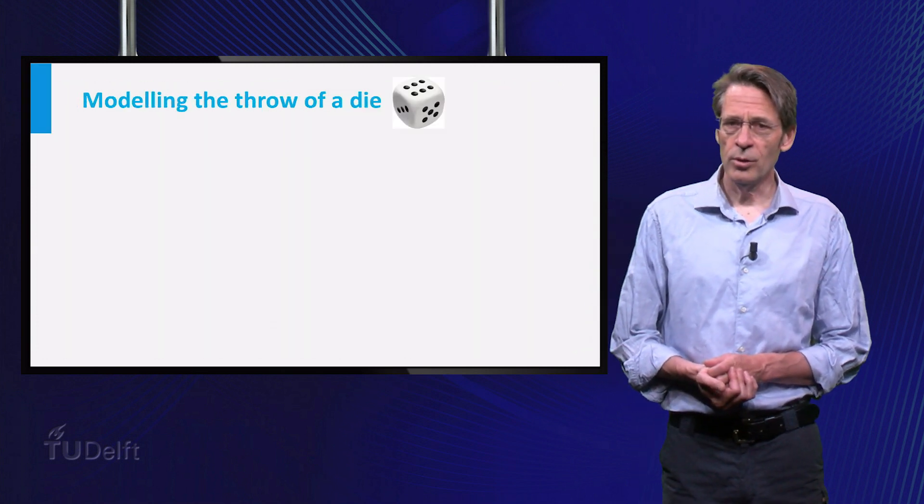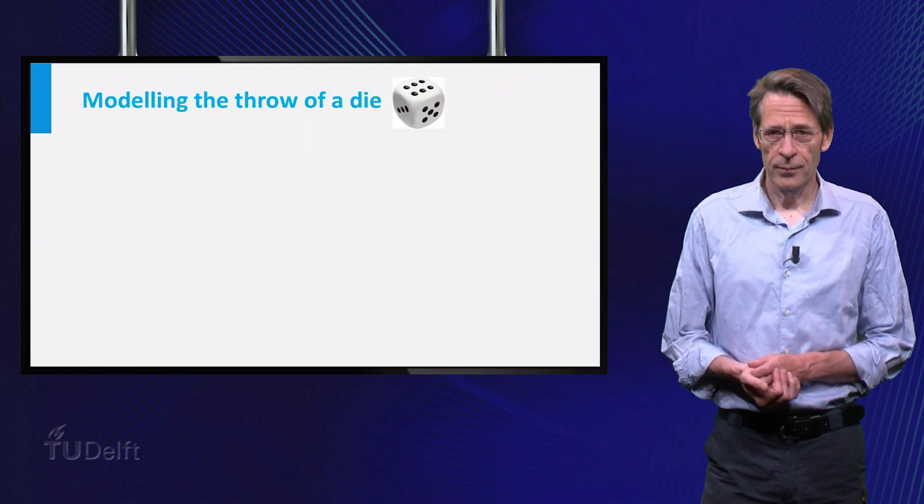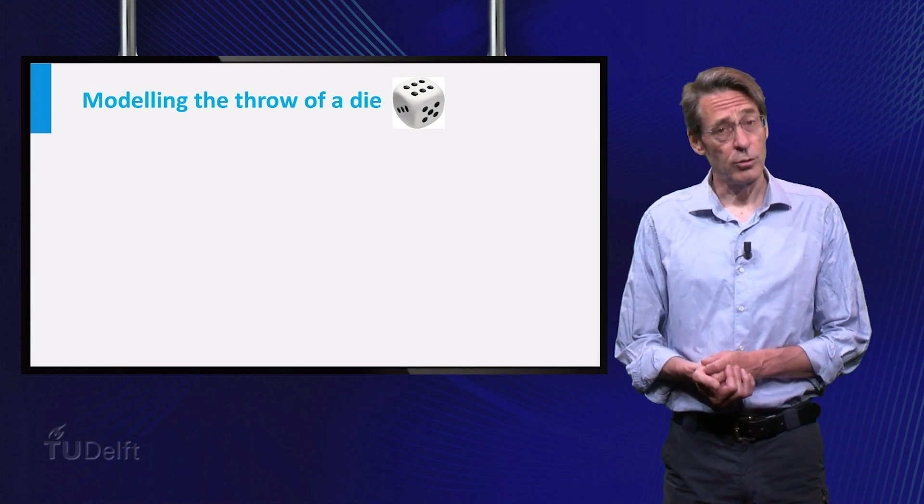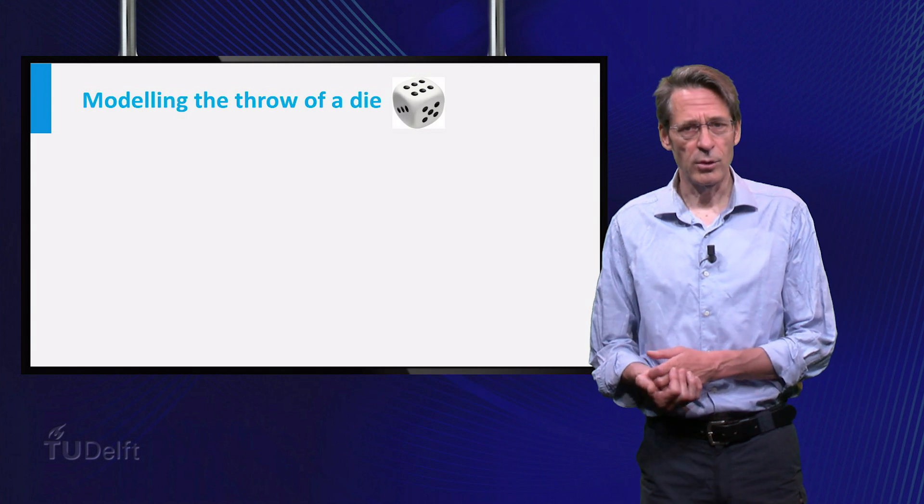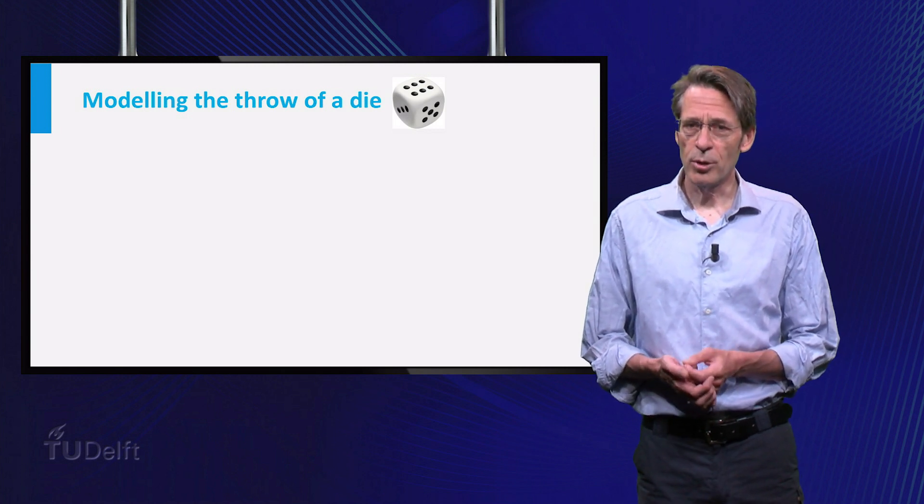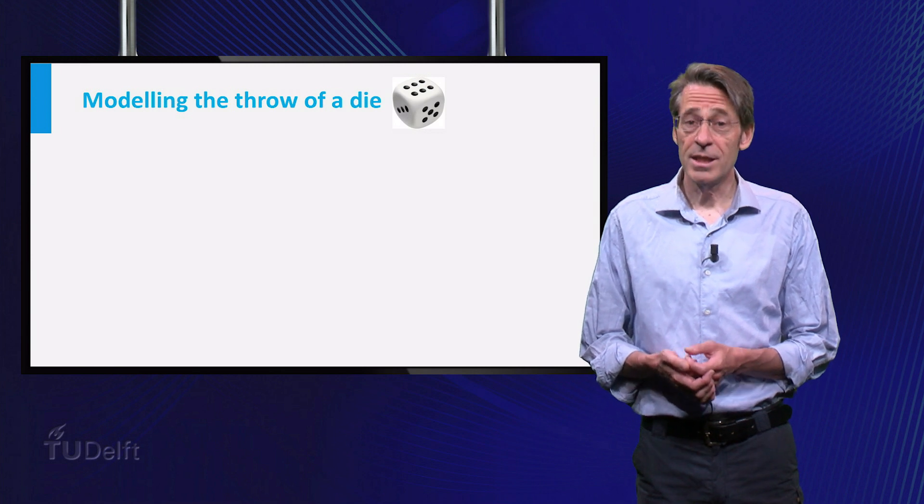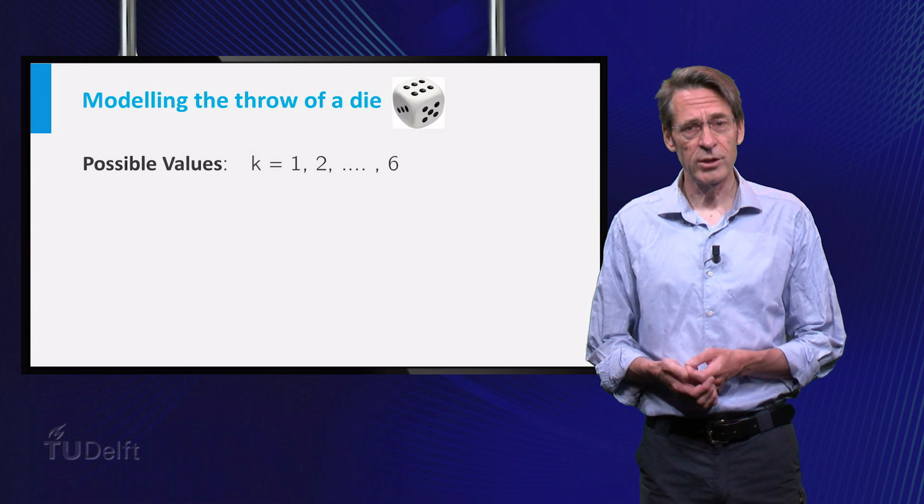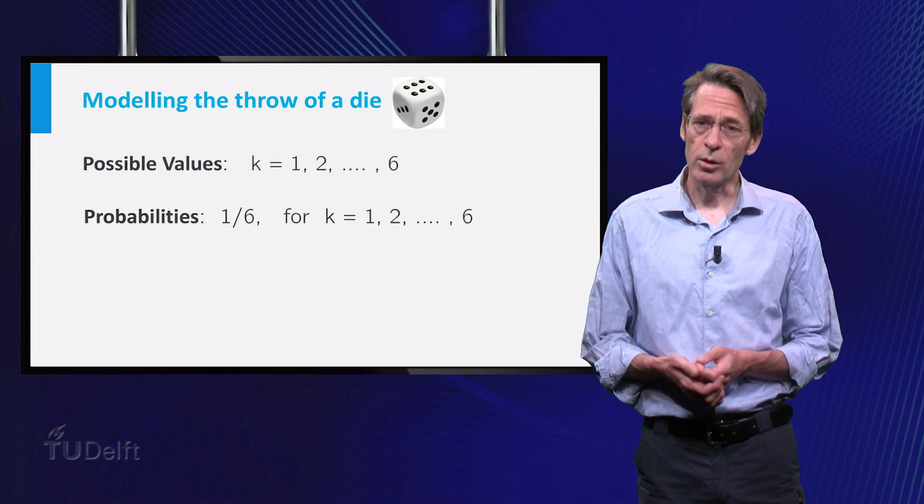As a very easy example, think of throwing a die. If you are only interested in the number that comes up, and not for instance on the position of the die on a table, and if you suppose that it is a fair die, then the process of throwing this die is captured by the random variable with possible values 1 up to 6, each with probability 1 over 6.